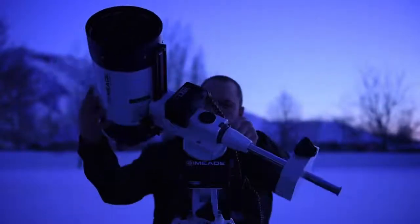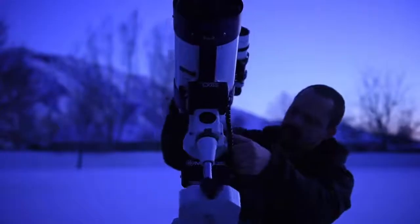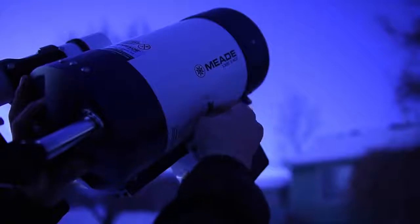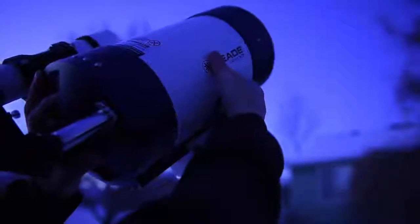Before adjusting the OTA, always move the optical tube back to the home position. Carefully unlock the dovetail locking screws while holding onto the optical tube. Then slide the scope forward and backward slightly as needed to reach balance.